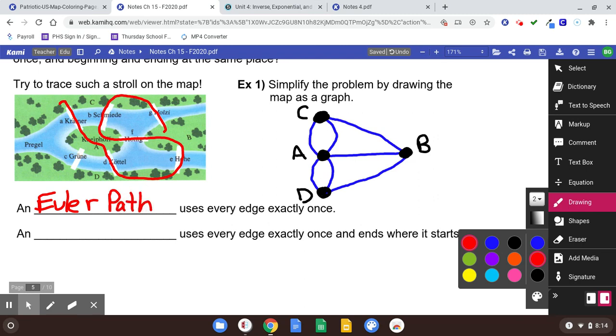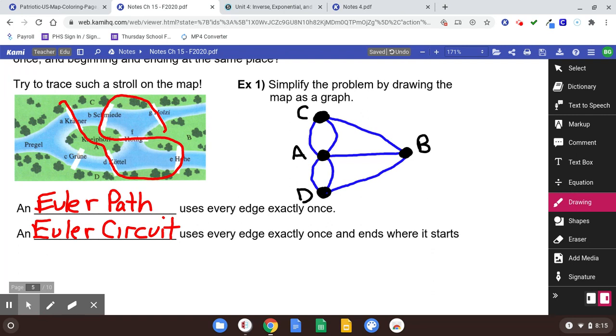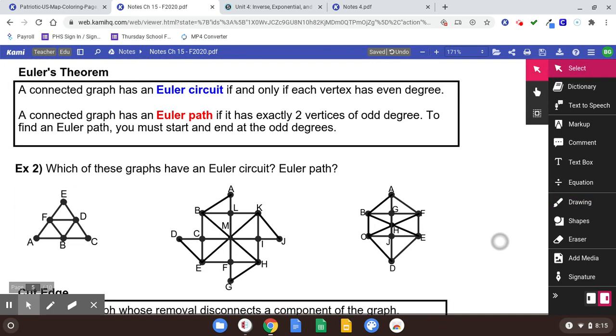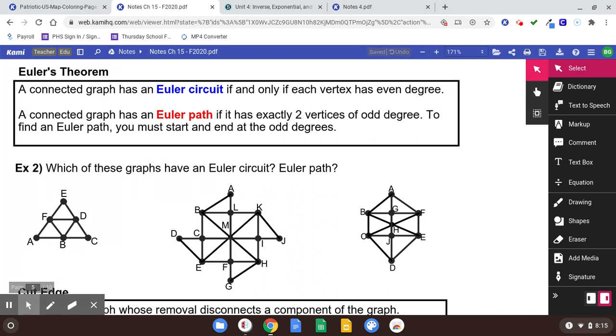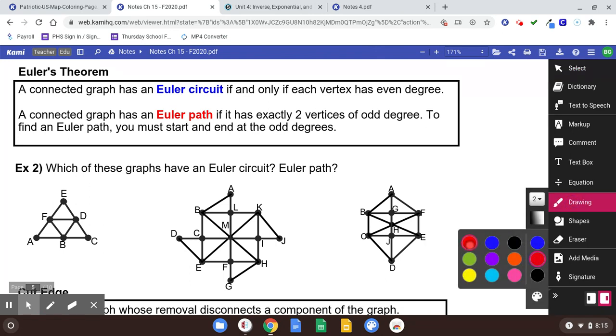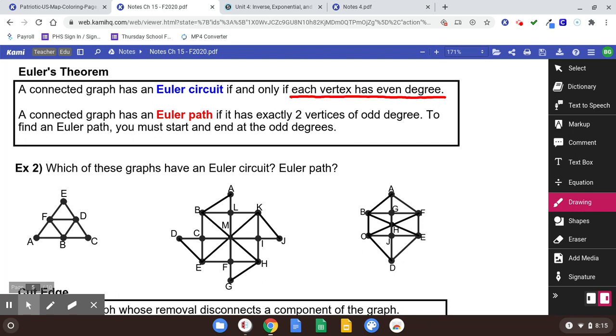An Euler path uses every edge exactly once. An Euler circuit uses every edge exactly once and ends where it starts. Understand, learn those definitions as quickly as possible. That's pretty much the whole lesson. Lesson is on Euler circuits. Make sure you know that definition.